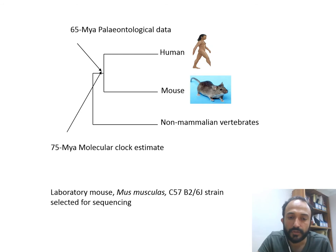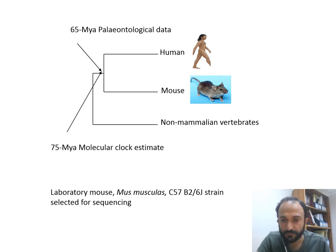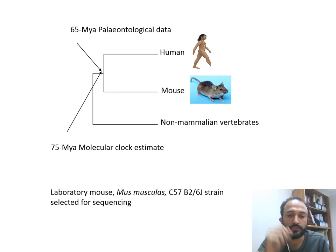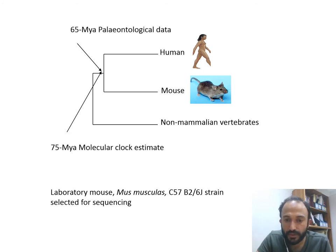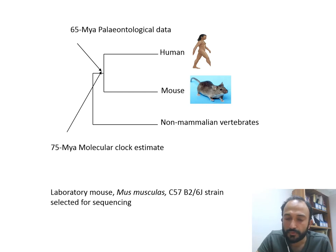Based on the molecular clock estimate, there is a gap of 75 million years between human and mouse. The molecular clock refers to the uniform rate of change of any sequence of a genome, and based on that rate of mutation, the gap of 75 million years between human and mouse was estimated. For your information, the mouse biological name is Mus musculus, and this strain was used for the sequencing of the mouse genome by the Mouse Genome Consortium.